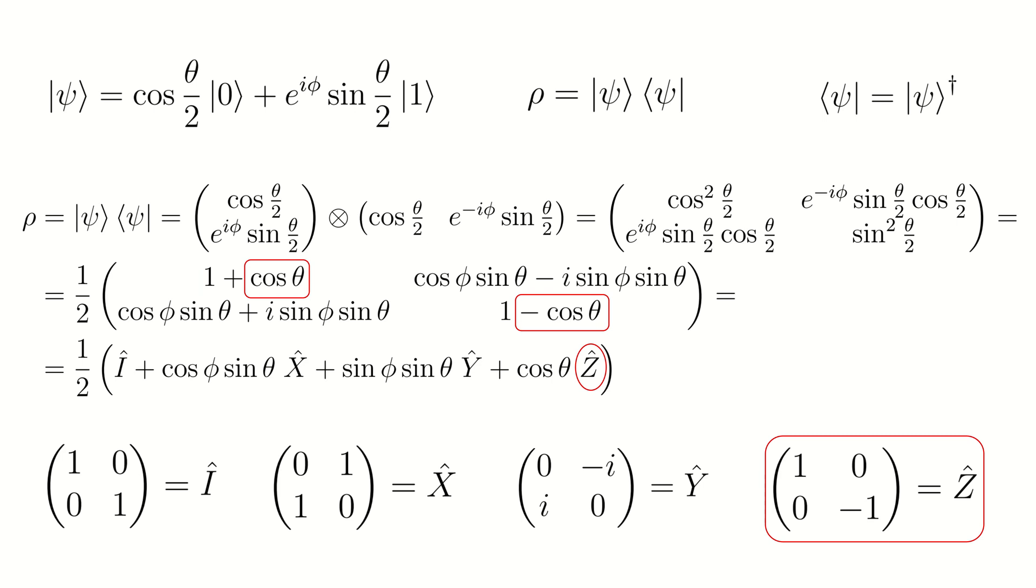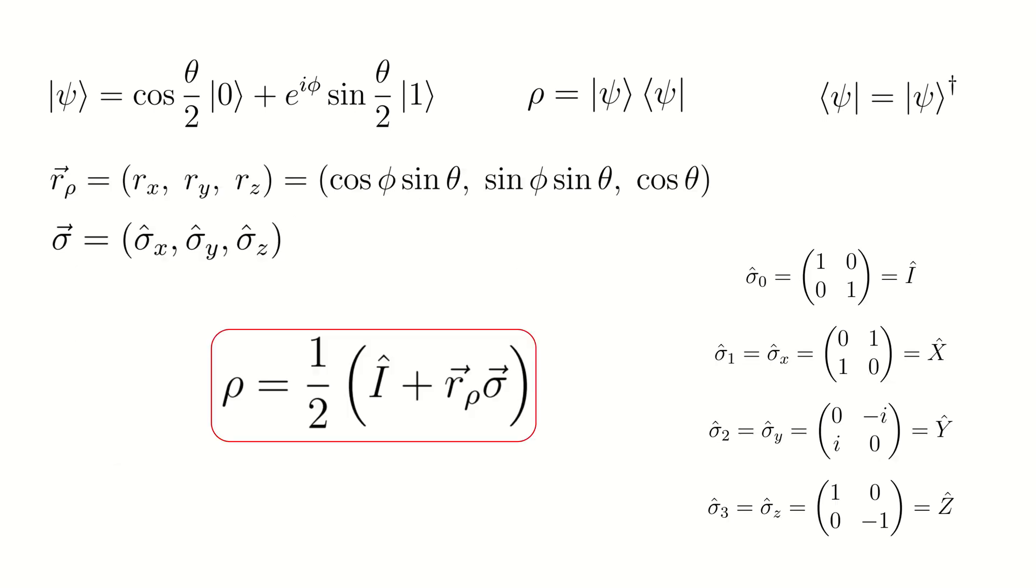By introducing some notations, this formula can be written in compact form. Here, sigma is a vector consisting of Pauli matrices and r is a unit vector on the Bloch sphere.